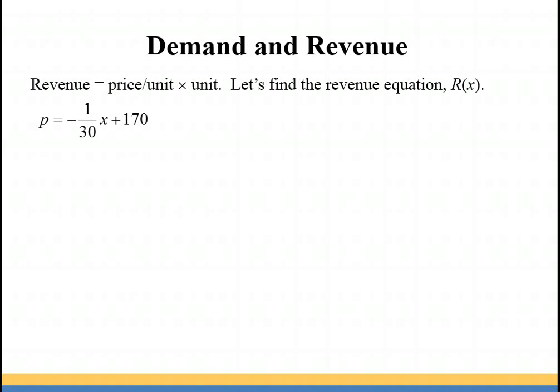Now we want to talk about revenue. Revenue is just how much we make in sales based on these textbooks and at what price they're sold at. So revenue is going to be the price per unit times the number of units sold. We're going to start with our price equation of -1/30x + 170, and we're going to multiply that equation by x to get the revenue. So p times x is R(x) = -1/30x² + 170x. And that's going to give us our revenue equation.